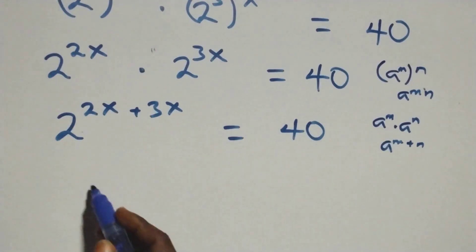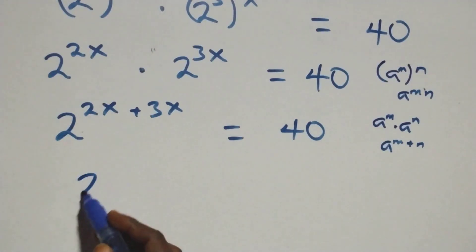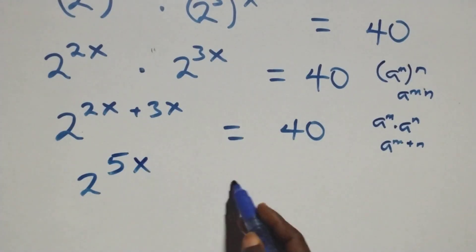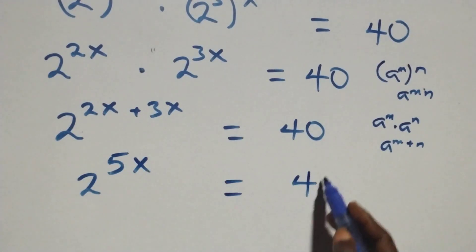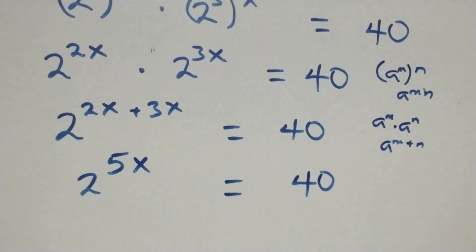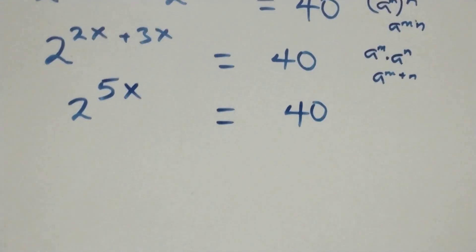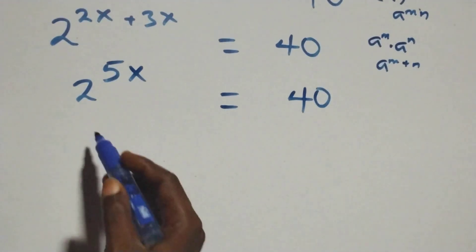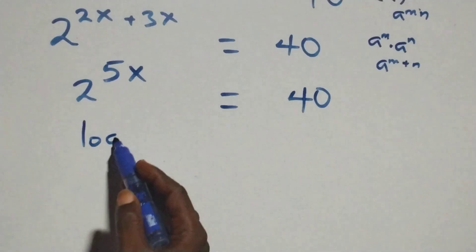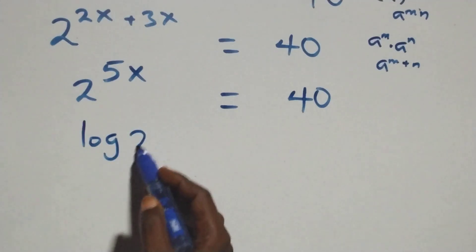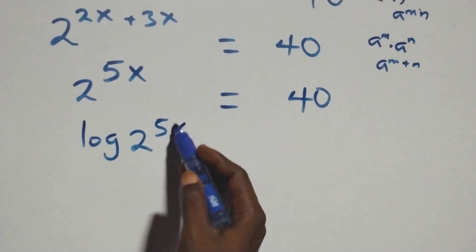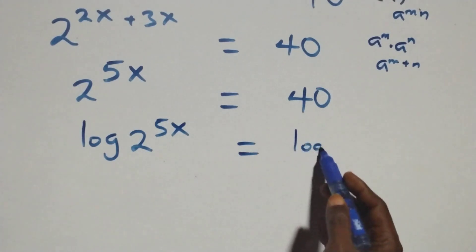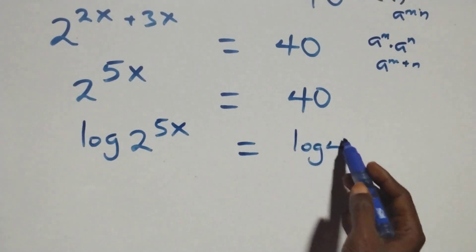The next step: we have 2 raised to power 5x equals 40 on this side. The next step here, we take the log on both sides — we have log of 2 raised to power 5x equals log 40.